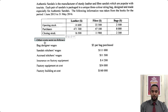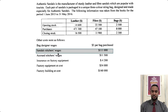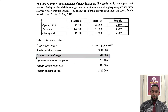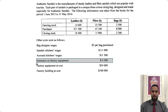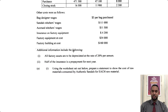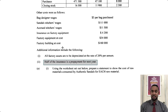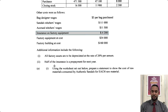Other costs were as follows: bag designer wages at $5 per bag purchased — that's going to cause a problem later, I'll tell you when we get to it — sandal stitches wages, accrued stitches wages, insurance on factory equipment, factory equipment at cost, and factory building at cost. Additional information includes: all factory assets are to be depreciated at a rate of 20% per annum, and half of the insurance is a prepayment for next year.